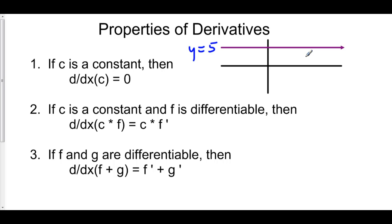And that's why the slope of a constant, or the derivative of a constant, is just zero.